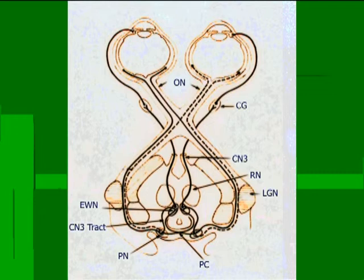The decussation gives you innervation of both pre-tectal nuclei, and then the pre-tectal nuclei send an intercalated neuron down to the Edinger-Westphal complex ipsilaterally and through the posterior commissure contralaterally. So you have ipsilateral and contralateral innervation of both the pre-tectal nuclei and the Edinger-Westphal complex. This is why pupils are symmetric with severe optic nerve or retinal disease.